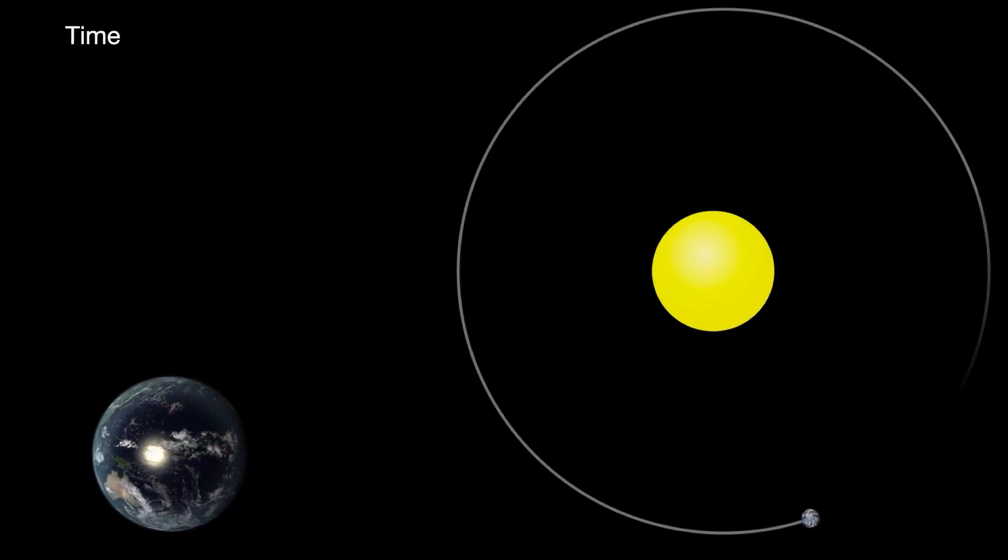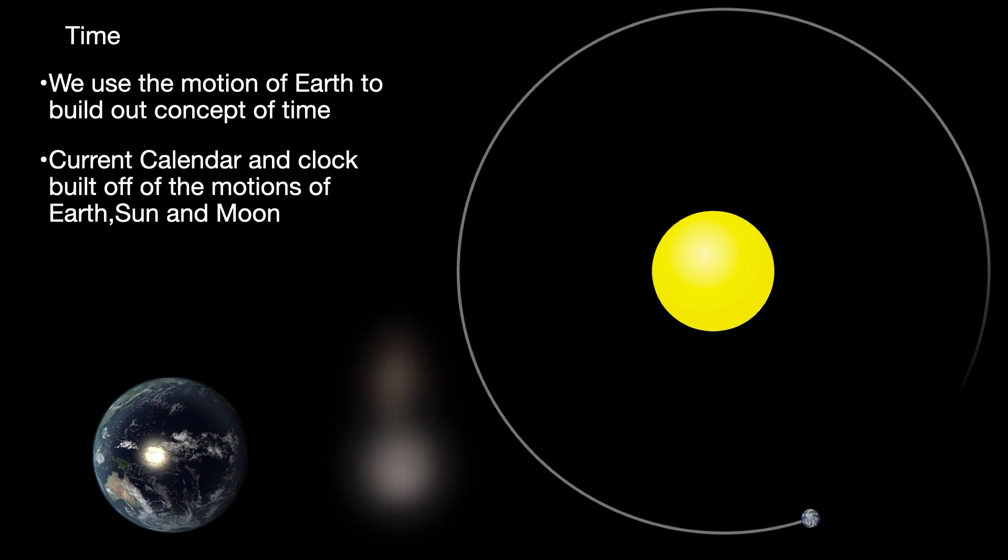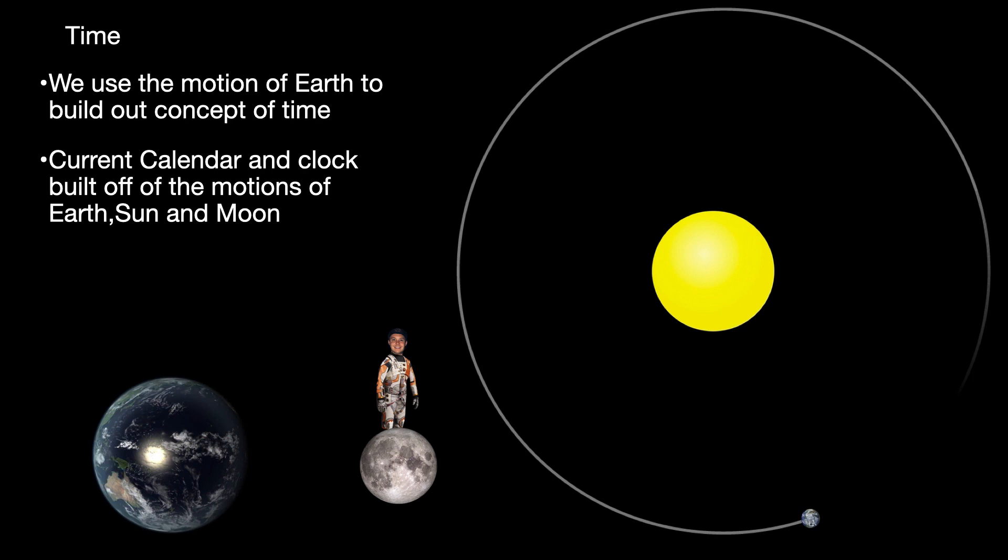Overall, we have used this information to construct the way that we tell time. This means that the motions of the Earth around the sun, along with the moon, which we will get into later, have been used to build our current calendars and clock system across the entire planet. So reviewing the ways that we've defined time along with the motions of Earth is something that you maybe have known or understood for a while, but it is important to go back and connect how these two things relate.